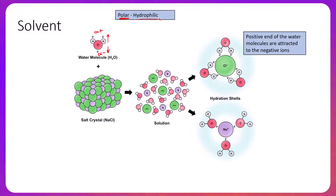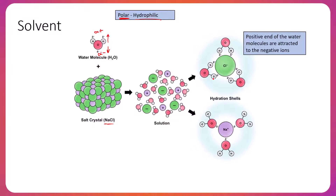The way water interacts with polar substances — for example, salt — is as follows. Salt is a solid crystalline structure, and when you dump salt into a solvent like water, the chlorine and sodium ions dissociate, breaking the bonds between themselves, and are then bonded weakly to the water molecules. Zooming in on those interactions, the chlorine ion, which is negatively charged (an anion), interacts with the slightly positive sides of the water molecules, because opposites attract. So the positive ends of the water molecules orient themselves toward the negative chlorine ion.